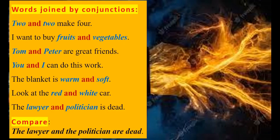Now, words — single words — joined by conjunctions. Two and two make four. I want to buy fruits and vegetables. Tom and Peter are great friends. You and I can do this work. The blanket is warm and soft. Look at the red and white car. The lawyer and politician is dead.